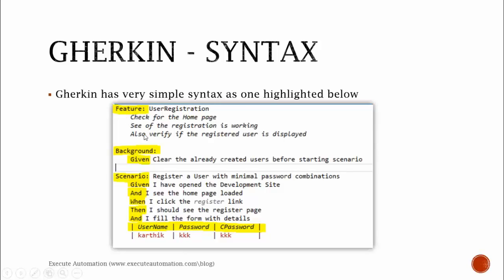Gherkin looks like very simple plain text. As you can see here, the highlighted items are the only syntax Gherkin has — like Feature, Background, Given, Scenario, When, Then, and And. Yes, these are the syntax keywords in Gherkin, and the parser which parses Gherkin knows what has to be done based on the command given in the plain text.